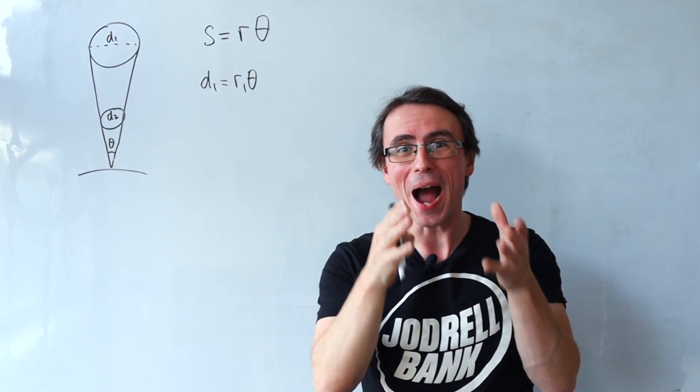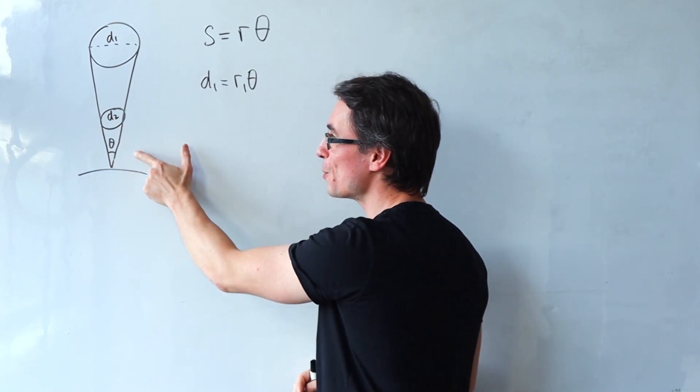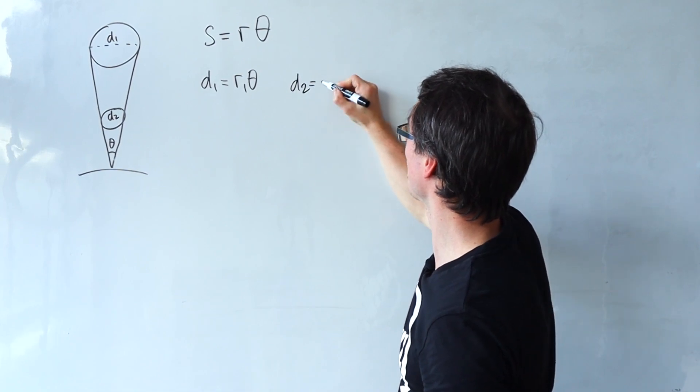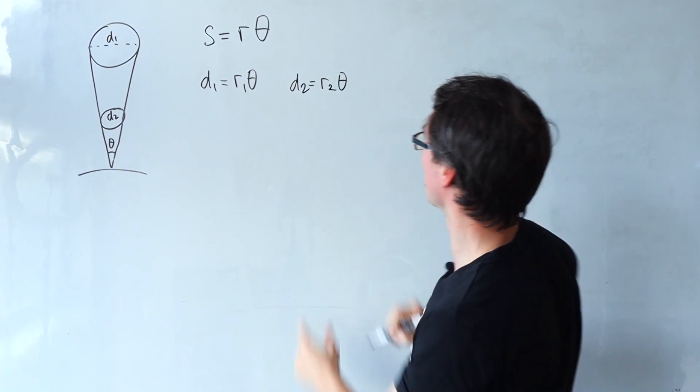Exactly the same equation we'll have to apply for the moon judging by our diagram that we've drawn here. So we can just say that d2 will be equal to r2 multiplied by theta.